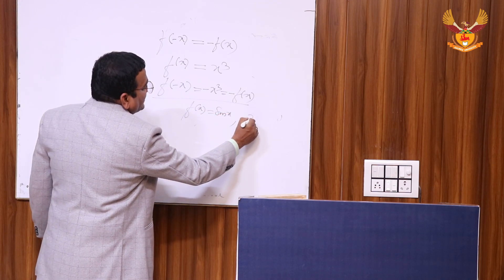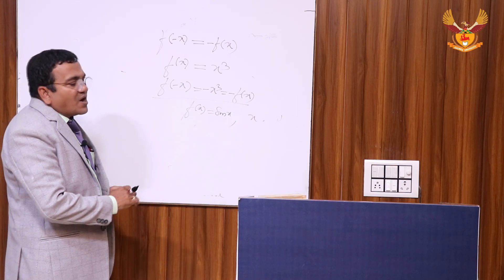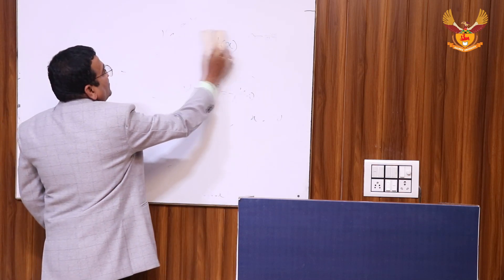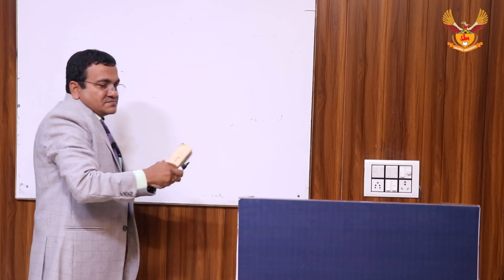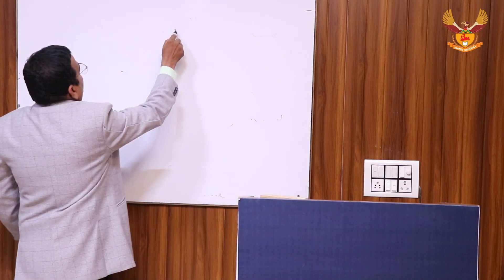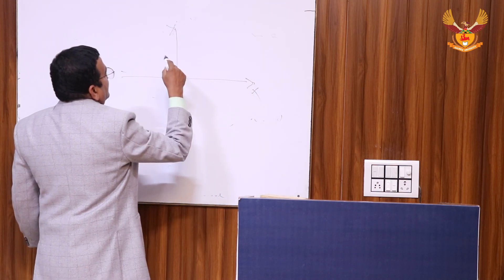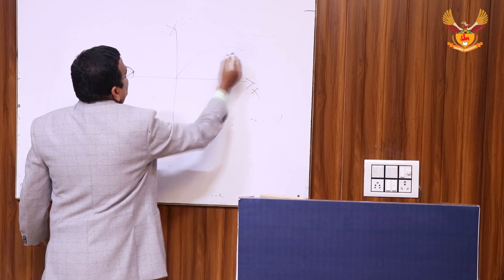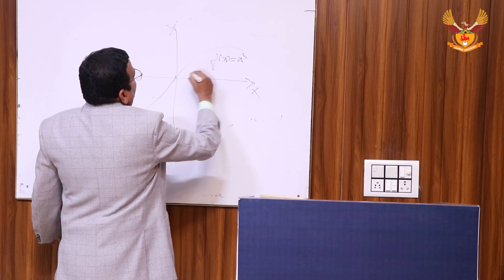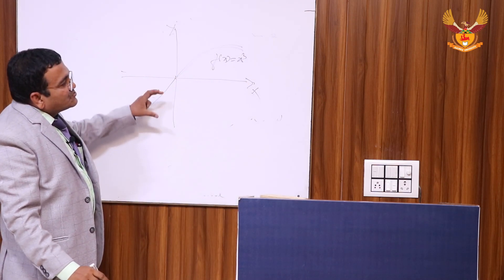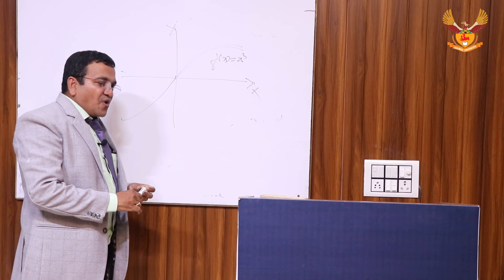What is the geometrical meaning of the odd function? In the x-y axis, if f(x) = x³, this is the representation of the odd function. This is symmetric about the origin.